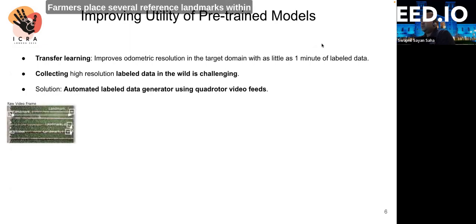Farmers place several reference landmarks within the predefined area, measuring the horizontal and vertical distance between them. The robot is then driven through the area, the video of which is captured by a hovering quadrotor.